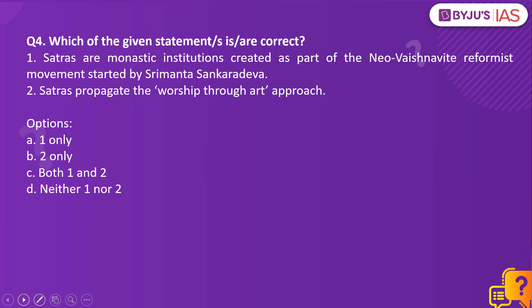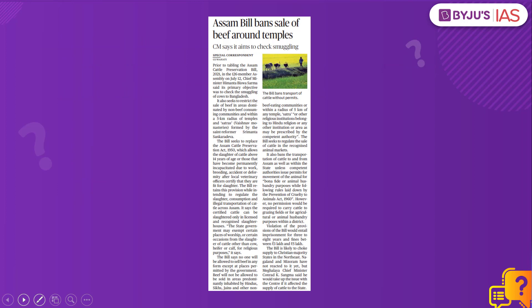Question number 4. Which of the given statements is or are correct? Statement 1: Satras are monastic institutions created as a part of the Neo-Vishnavite reformist movement started by Srimanta Sankaradeva. Statement 2: Satras propagate the worship through art approach. Why have we taken this question? The Assam Cattle Preservation Bill 2021 has been tabled in the Assam State Assembly, and among its provisions is the mention of satra.